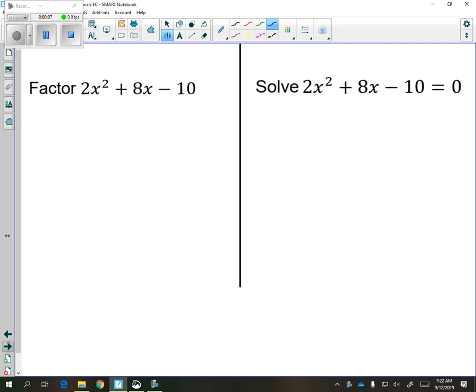So let's look at the visual difference between these two examples. On the left we have a trinomial, and on the right we have the same trinomial, but on the right we have an equals zero.